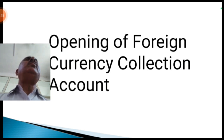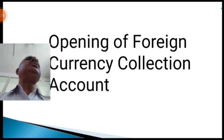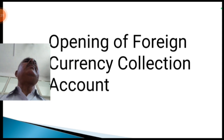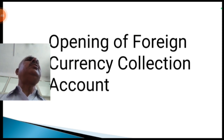The interest and maturity proceeds of government securities, including national plan savings certificates, sale proceeds of government securities sold on a stock exchange, as well as dividends on units and repurchase proceeds thereof, may be credited to the NRI account in cases where the investment was originally made out of remittance from abroad or by debit to the investor's NRI account in India and the units were purchased directly from UTI. In other cases, the amount should be credited to the NRO account of the investor.